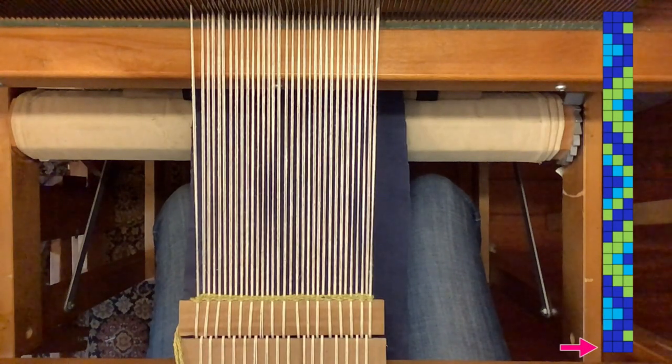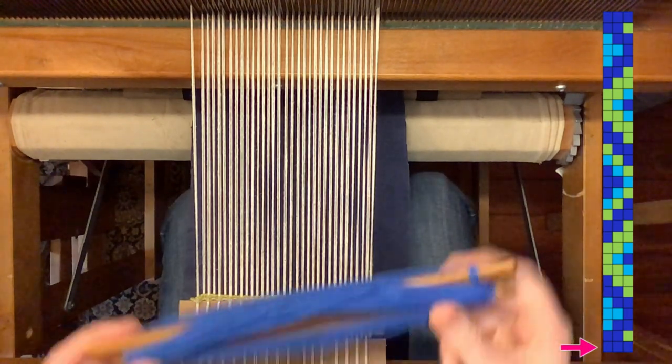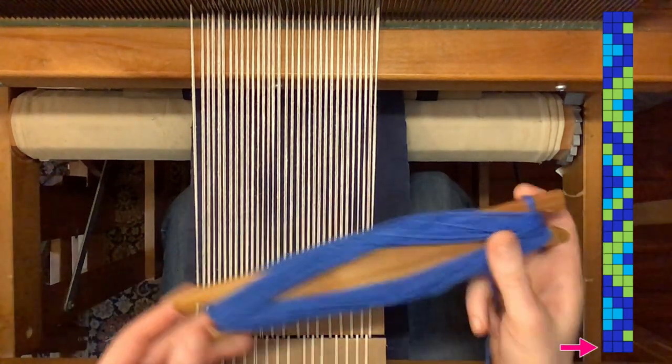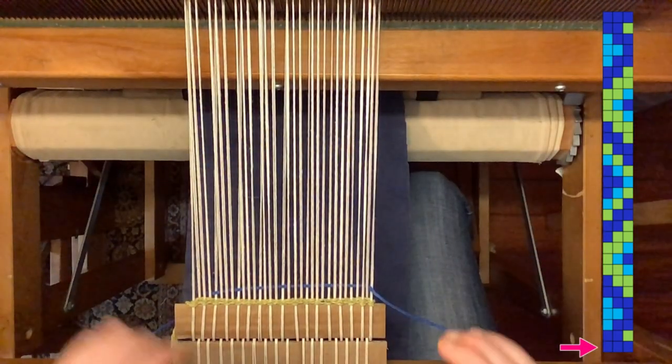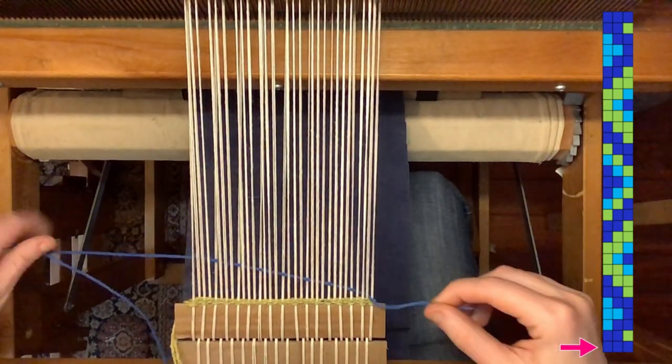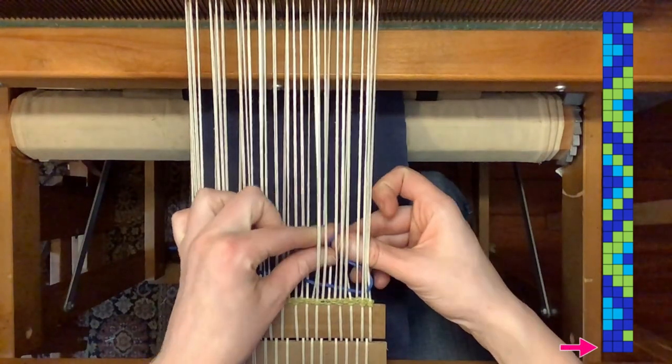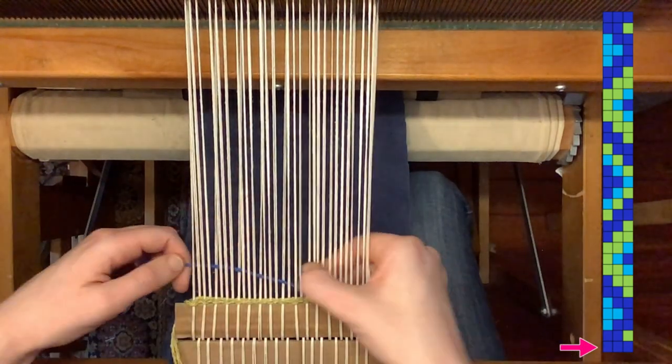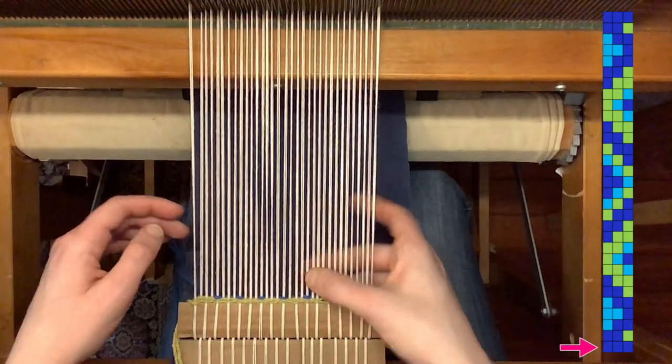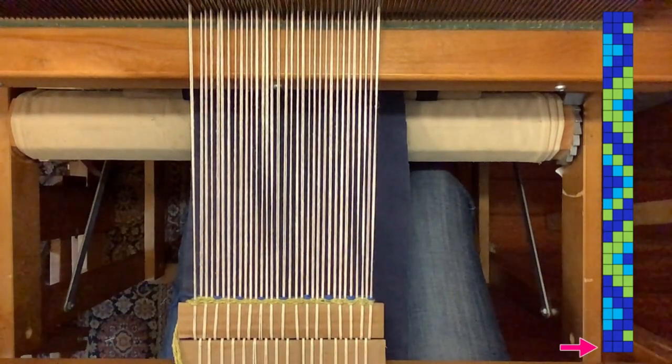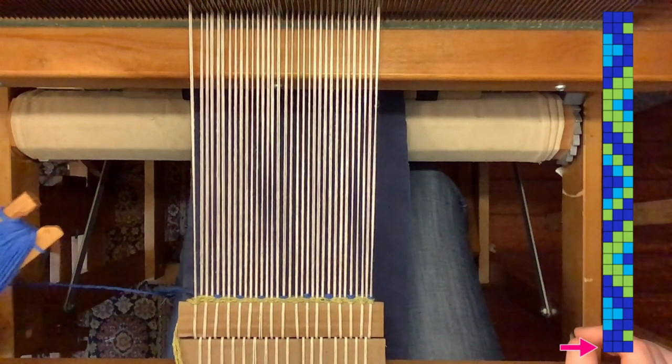My pattern actually starts out with a solid block of dark blue in all three sheds. So to start it off I'm going to add my blue in here and just wrap the end around to keep it secure in there. And that is the main difference between this pattern and the one I did in my previous video. There are a lot more starts and stops in the colors that I'm using.